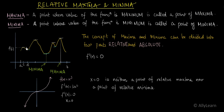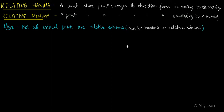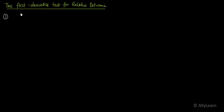We saw that even when the derivative is 0, the point may be neither maxima nor minima. So not all critical points are relative extrema — that is, not all critical points are relative maxima or relative minima. So how do we determine whether a point is relative maxima or relative minima without looking at the graph? We will study a test called the First Derivative Test for relative extrema.